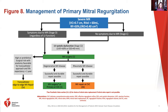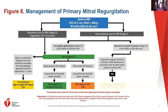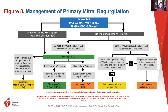If there are no symptoms but there's LV systolic dysfunction or marked dilatation of the left ventricle, that patient falls into the surgery category. If asymptomatic with normal LV function and no dilatation, there is a class 2 indication for mitral valve repair if anatomy is suitable, or class 2B if there's progressive increase in LV size or decrease in ejection fraction over at least three studies. For individuals who are asymptomatic and do not meet any of these criteria, serial monitoring is recommended.